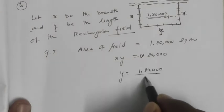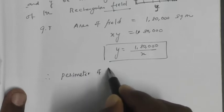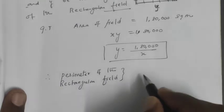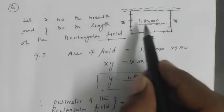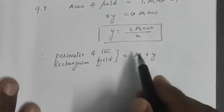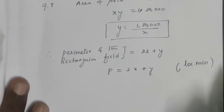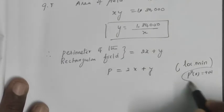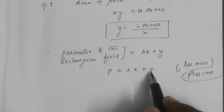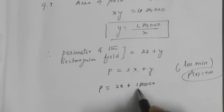Now the question is based on perimeter, so perimeter of the rectangular field is 2x + y. Perimeter P = 2x + y. For local minimum, I will use the concept that P''(x) is positive. We have two variables, one x and another y. Substituting the value, y = 180,000/x, so P = 2x + 180,000/x.